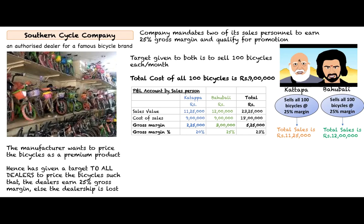For Bahubali, sales value is rupees 12 lakh minus cost of 9 lakh, giving a margin of 3 lakh, which works out to 25% — that is 3 divided by 12. In totality, Bahubali plus Kattapa gives rupees 23,25,000 in sales value, cost of sales of 18 lakh, and gross margin of 5,25,000.